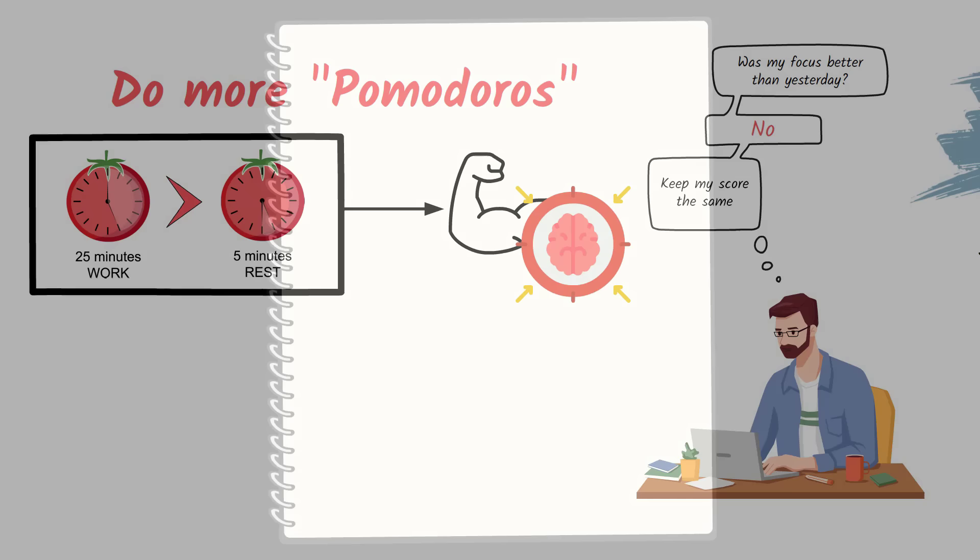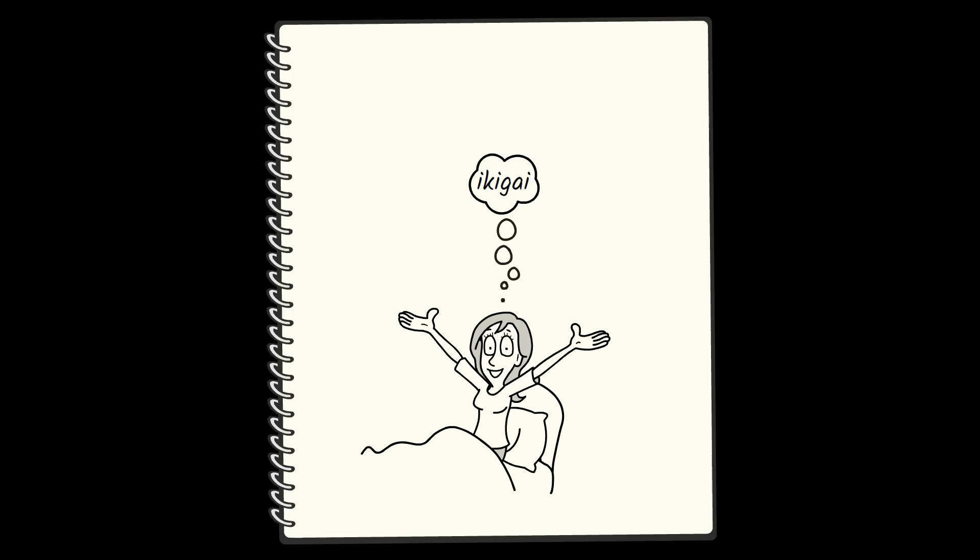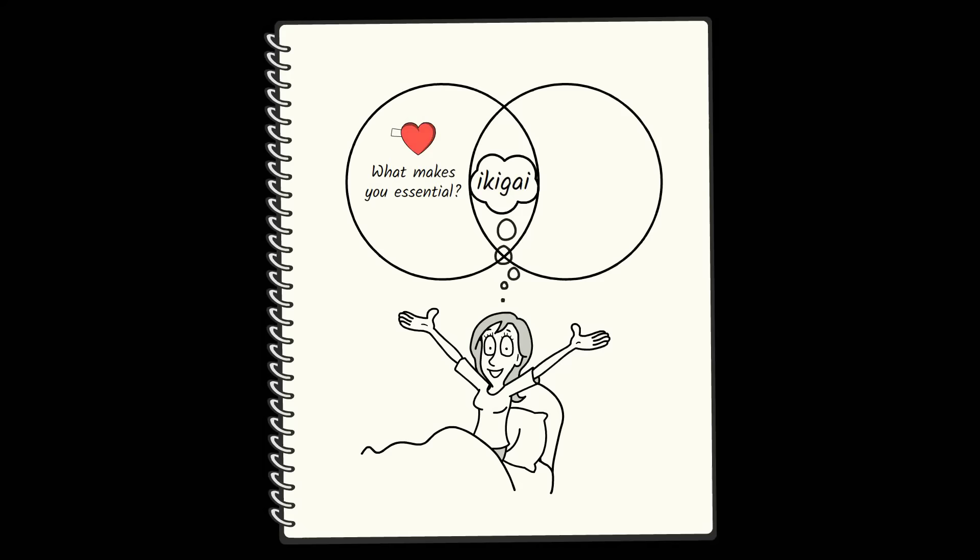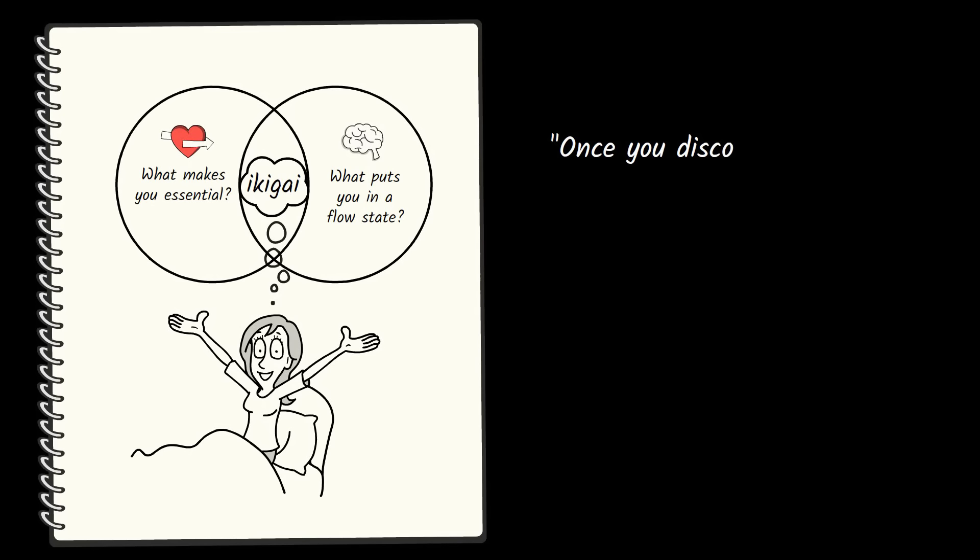In the end, the secret to living a long and happy life is to wake up each day with a clear Ikigai, a reason for living. You'll find your Ikigai at the intersection of what makes you essential to the people you love and who love you, and what puts you in a flow state. Garcia and Mirias say, once you discover your Ikigai, pursuing it and nurturing it every day will bring meaning to your life.